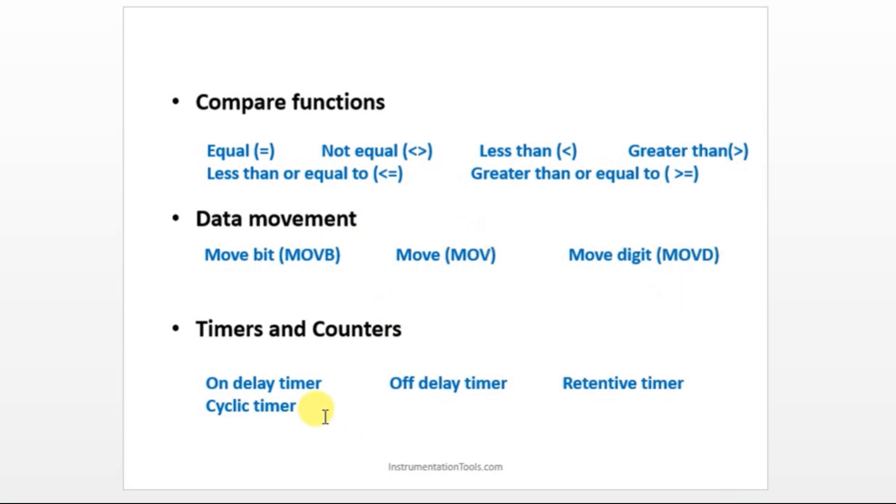We have timers and counters also. Timer is used to create some time delay. We have types of timers: on-delay timer, off-delay timer, retentive timer, and cyclic timer. We'll see this once we enter into the software programming part.